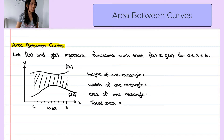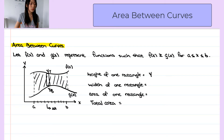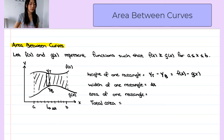Let's look at one rectangle at a time. For example, let's consider this rectangle and find its area. Let's call the y value at the top y-top and the y value at the bottom y-bottom. So the height of this rectangle is y-top minus y-bottom, or f of x minus g of x. And the width of one rectangle is the width of the subinterval, which is delta x. If we have infinitely many subintervals, then this delta x will become dx.